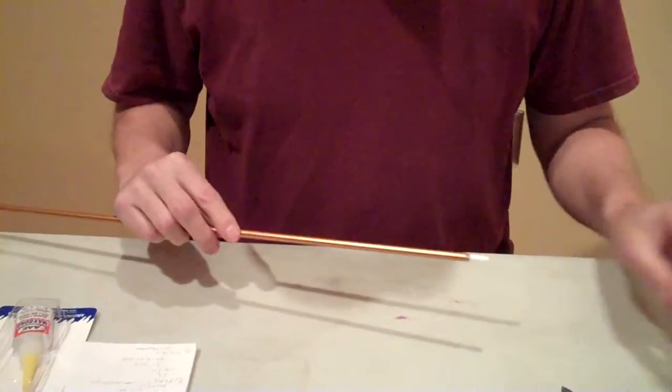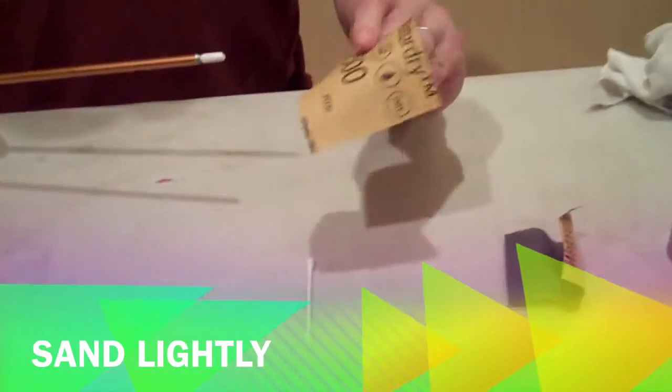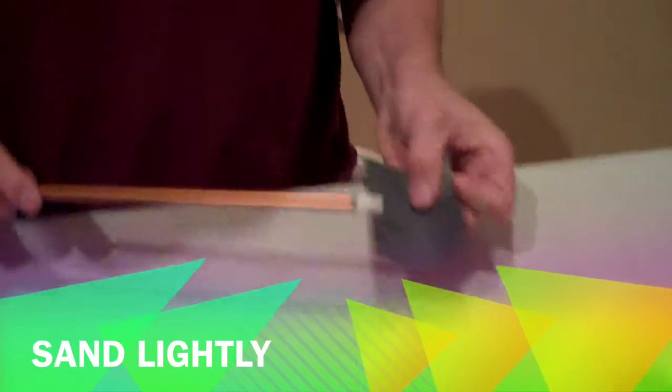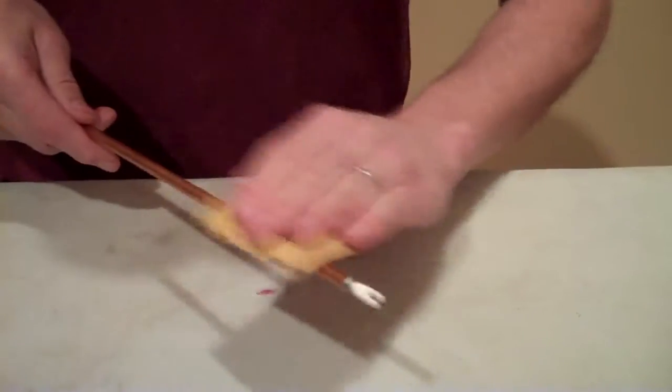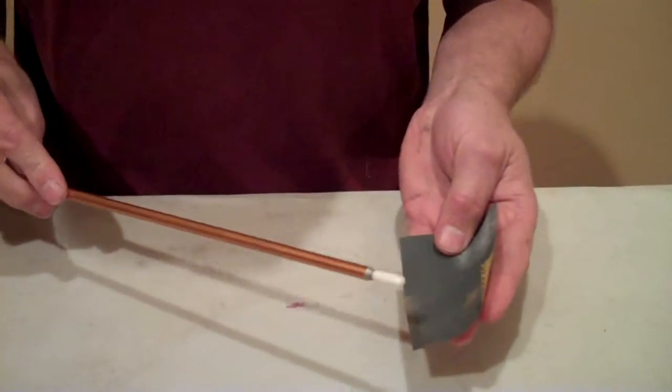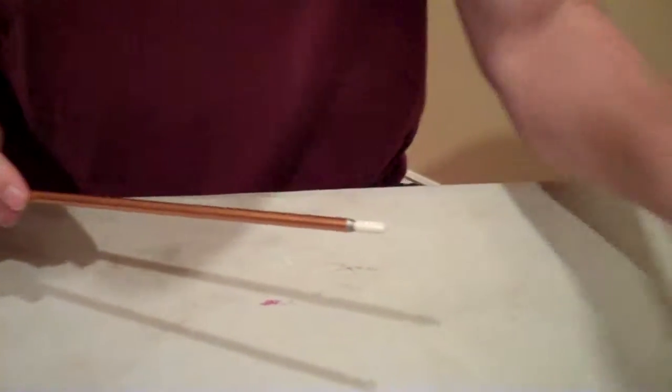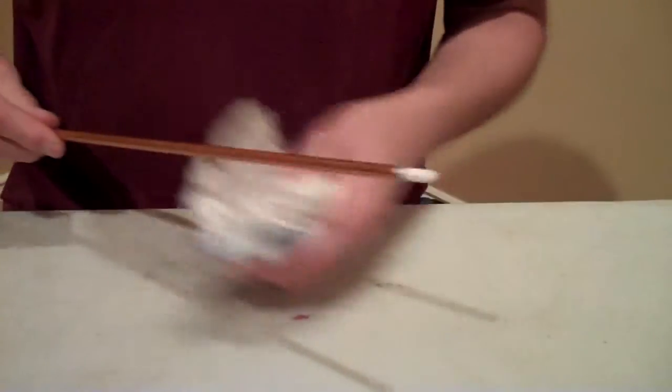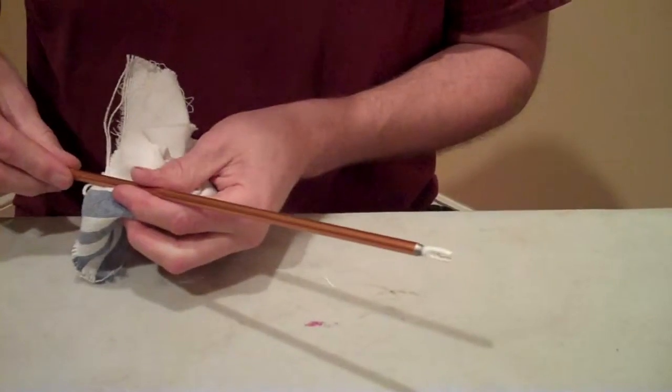Now, once that's dry, get yourself some 1500 grit sandpaper. And what you want to do is lightly sand just where you're going to put the fletchings, just to rough that up a little bit. With that, your arrow is now ready to fletch. Just clean it off with a nice clean rag. And this is all smooth and ready to go and ready to fletch.